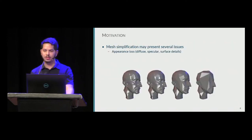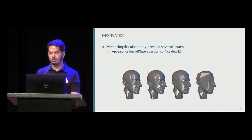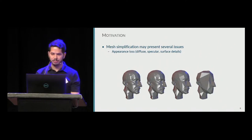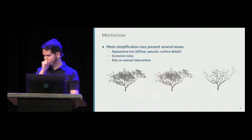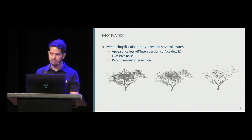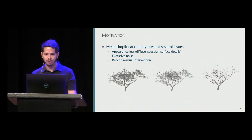One way of performing LOD is mesh simplification, to reduce the number of primitives that will be rendered. However, this approach suffers from appearance loss. As you can see in the image, the diffuse and specular shading does not fully appear after a few simplifications. In a scene like the tree, the small leaves will disappear, causing occlusion miscalculation. Also, mesh simplification has issues with excessive noise and could ultimately require manual intervention, adding extra work for the artist.